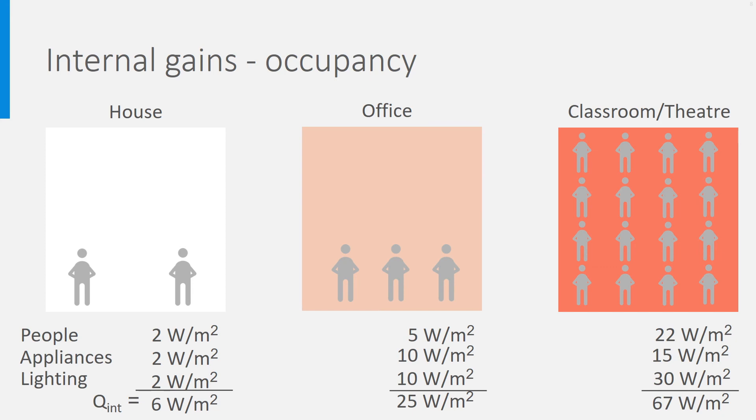Last but not least, we have the internal heat gains, which are the amounts of heat generated inside the building due to the use of appliances and lighting and the presence of people. Due to their metabolism, people have a heat rate delivery of around 117 W per person.